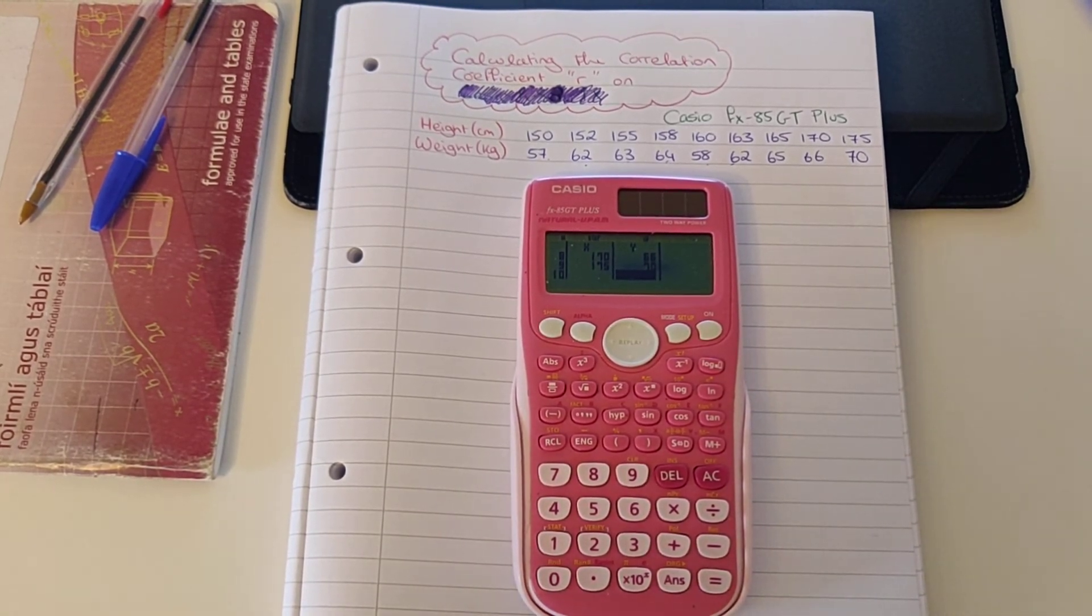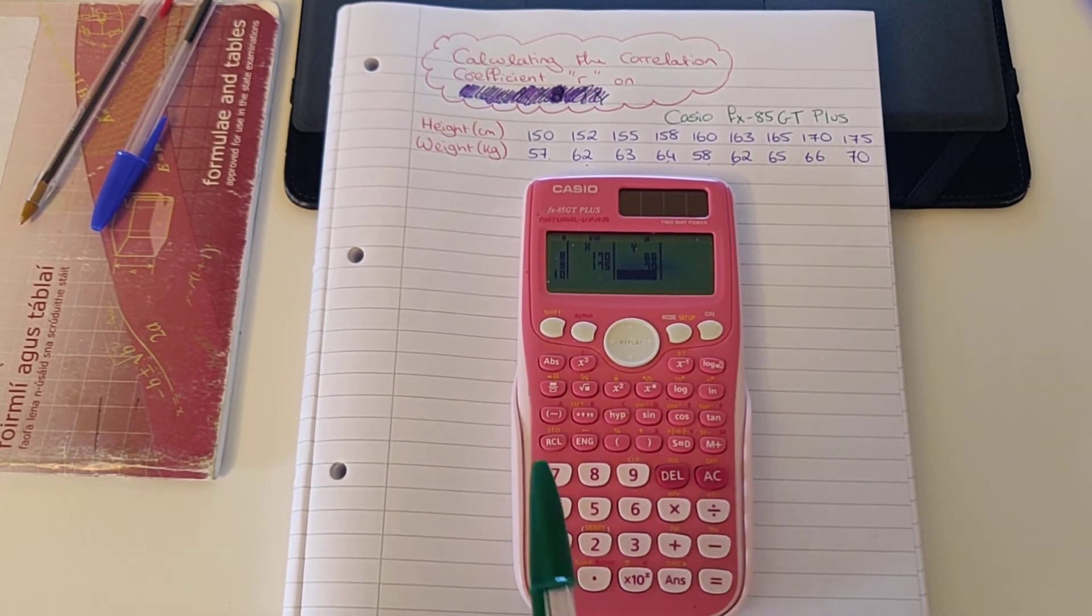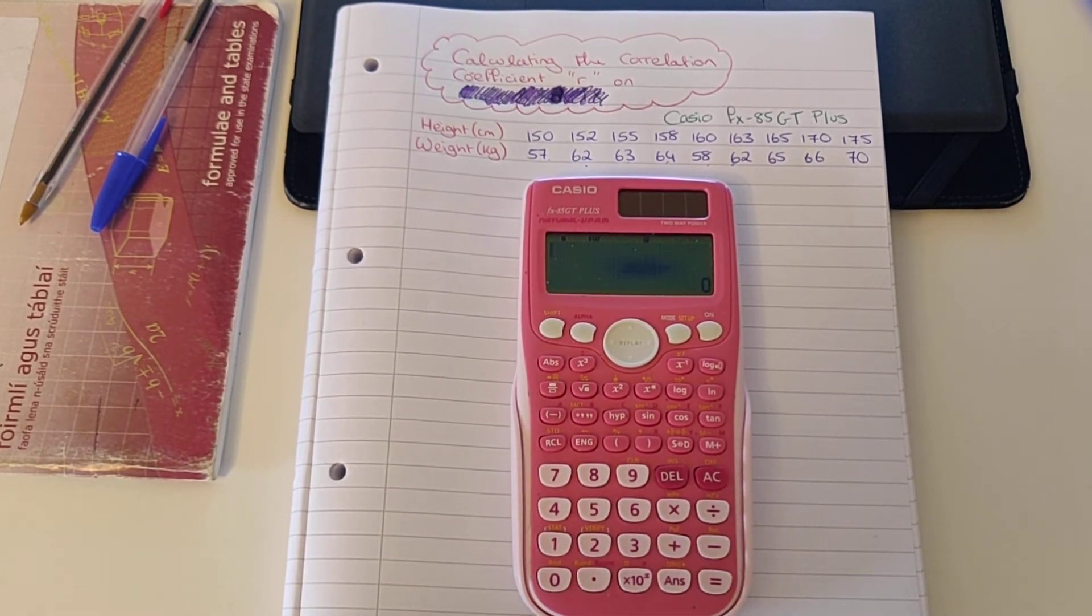So now to find the standard deviation, the next thing we're going to do is press the AC button, which is going to get rid of the table, but we're not going to panic. It's still there.